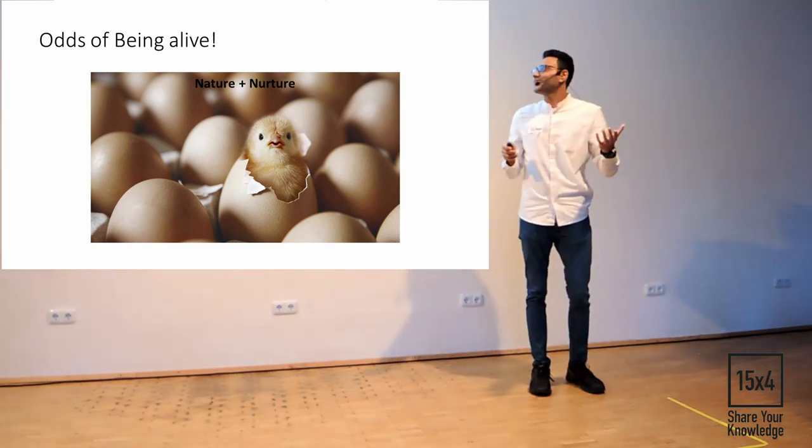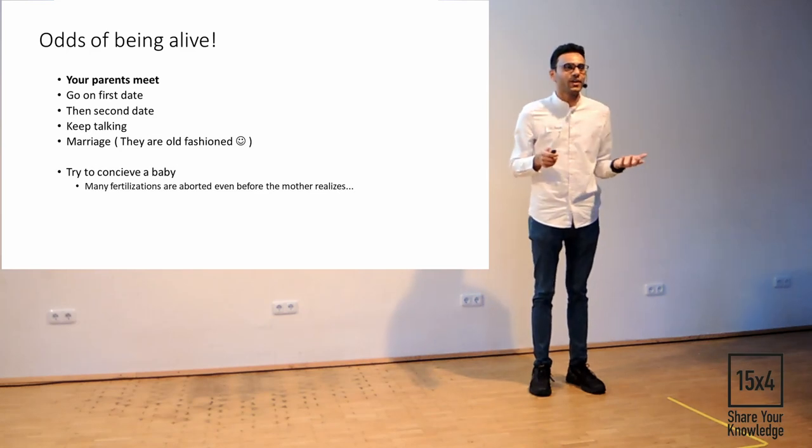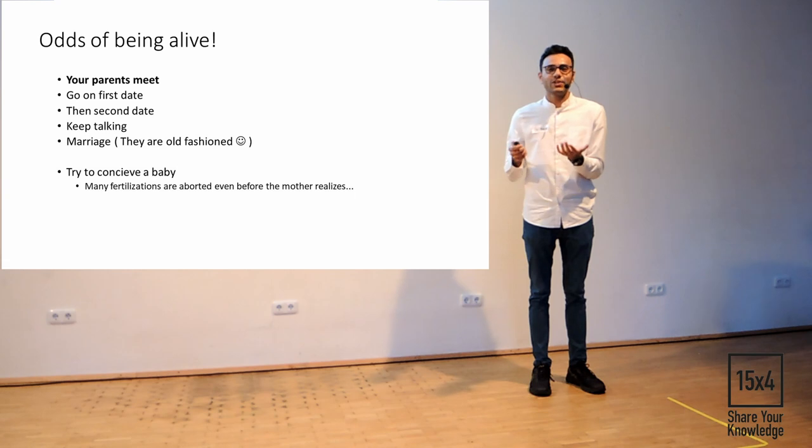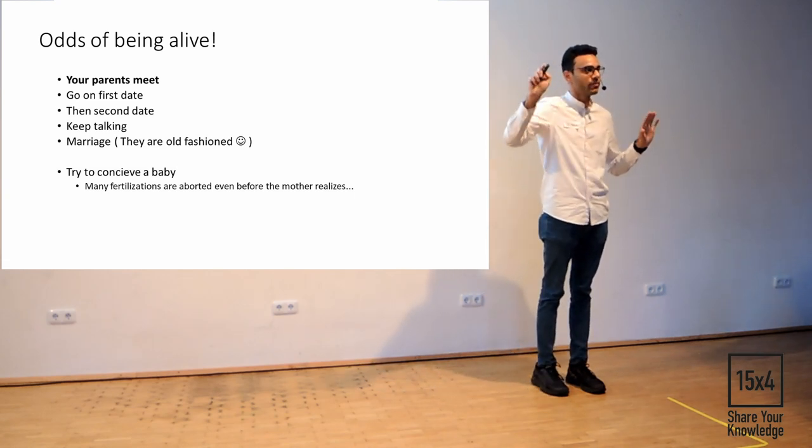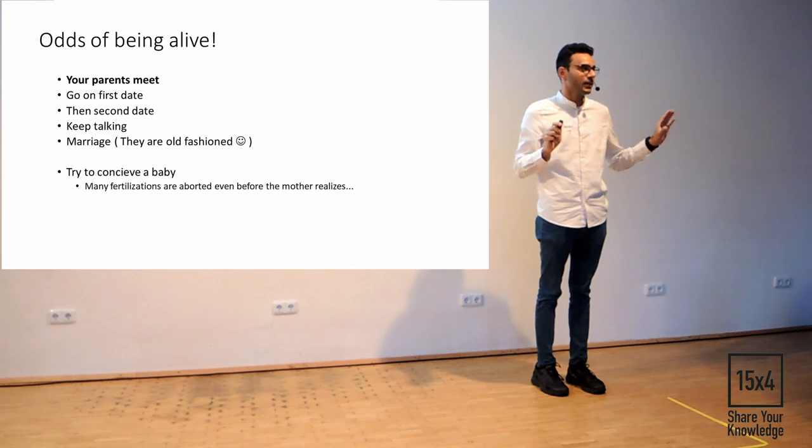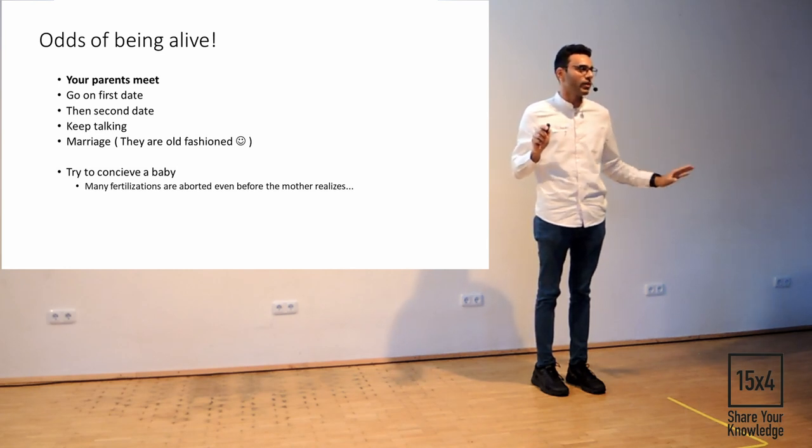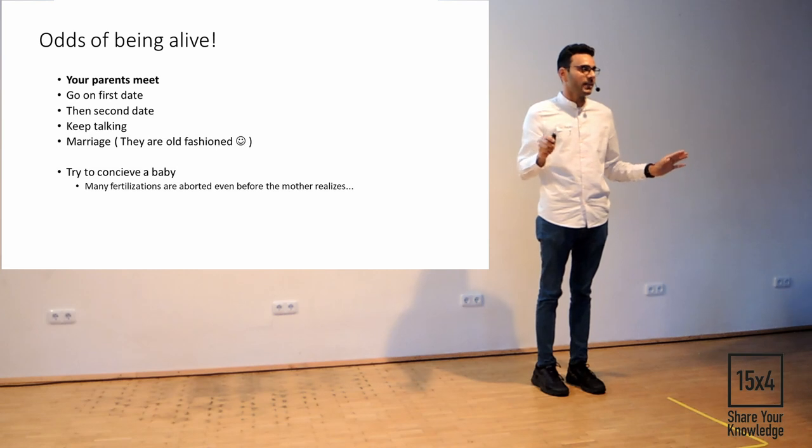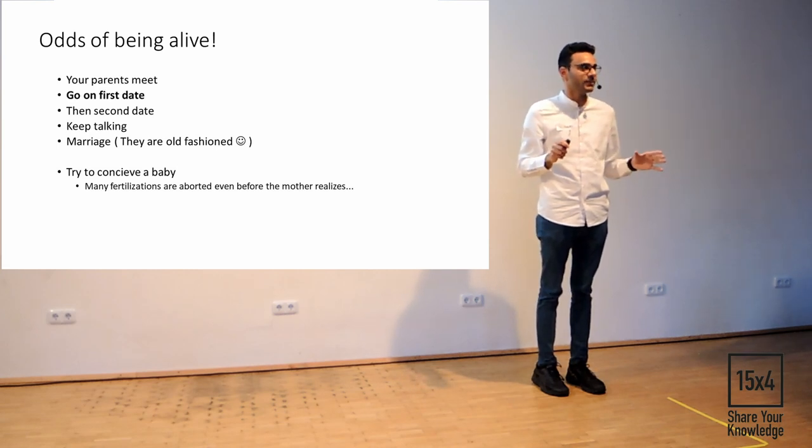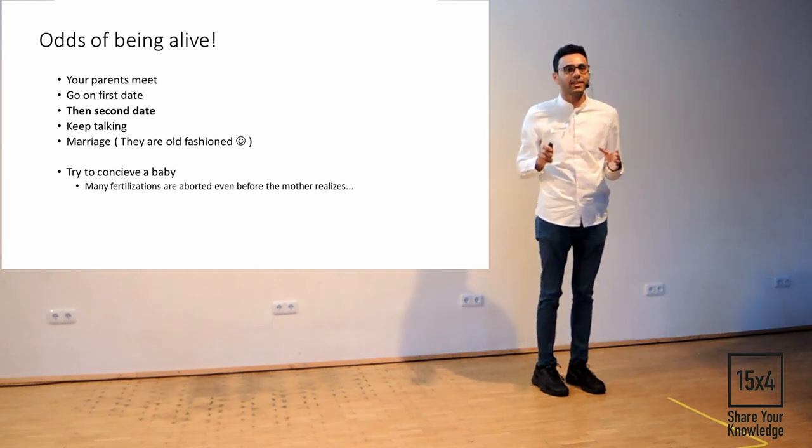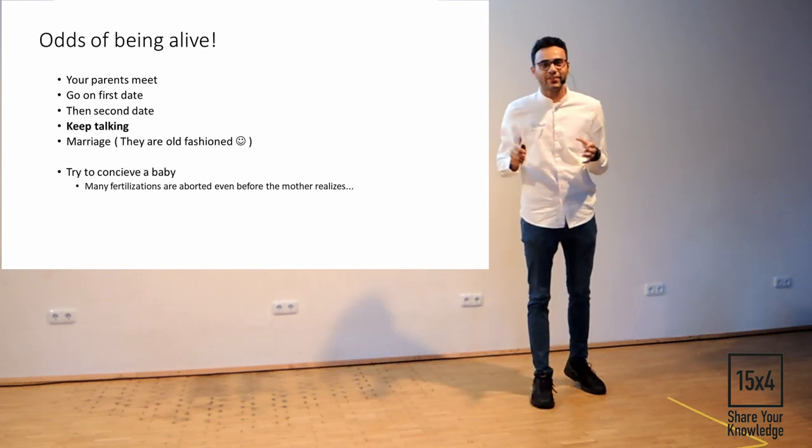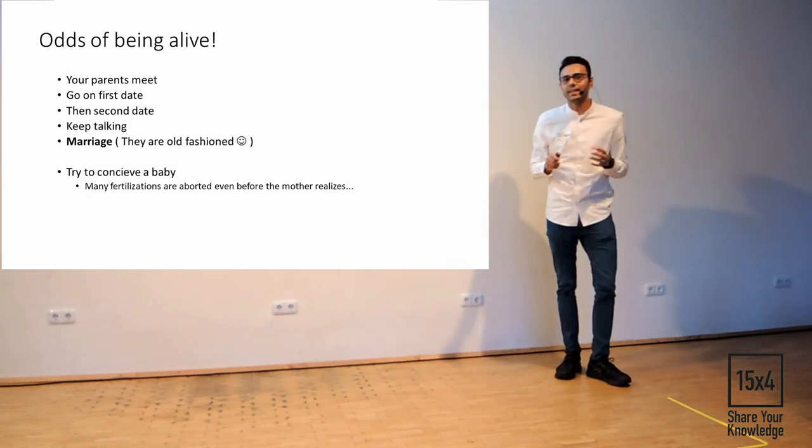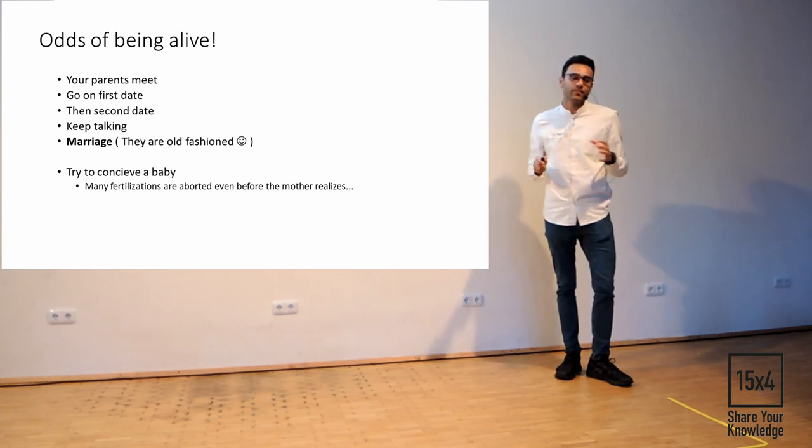If you want to define that, if you want to study that, you have to think that your gene combination is a combination, you're 50% your father, you're 50% your mother. So you have to start from the point where your parents met. Then they went on a first date, then they went on a second date, then they kept talking, and then they married, and then after that, they decided, okay, we need a baby.